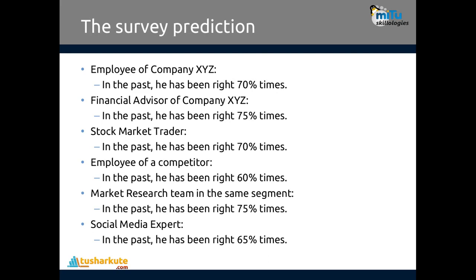Survey predictions are as follows: an employee of company XYZ has been right 70 percent of the time; the financial advisor of the company has been right 75 percent of the time; a stock market trader has been right 70 percent of the time; an employer of a competitor has been right only 60 percent of the time; a market research team in the same segment is right 75 percent of the time; and social media experts are right 65 percent of the time. The financial advisor and market research team have the highest accuracy. Can we achieve more than 75 percent accuracy? Yes, if we combine all decisions together — provided they are independent of each other.